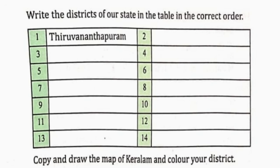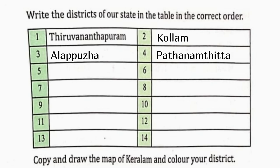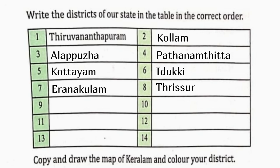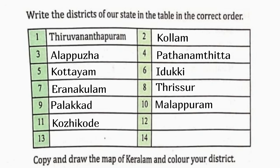Write the districts of our state in the table in the correct order: Thiruvananthapuram, Kollam, Alappuzha, Pathanamthitta, Kottayam, Idukki, Ernakulam, Thrissur, Palakkad, Malappuram, Kozhikode, Wayanad, Kannur, Kasaragod.